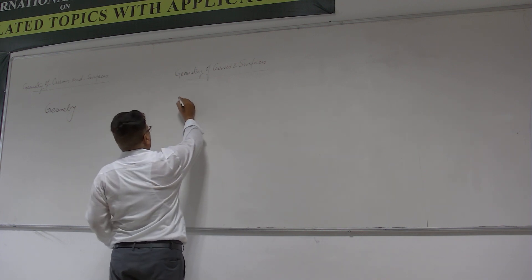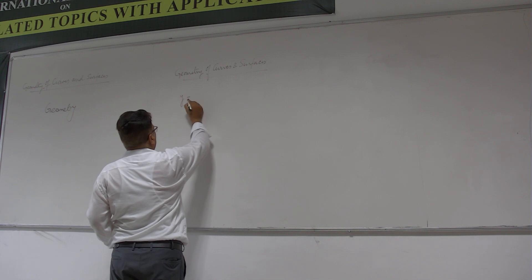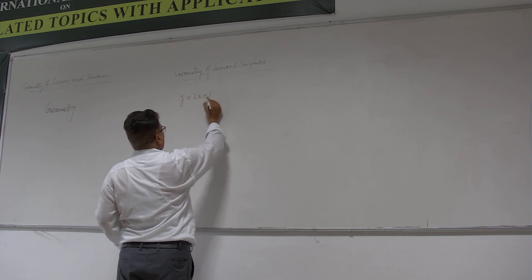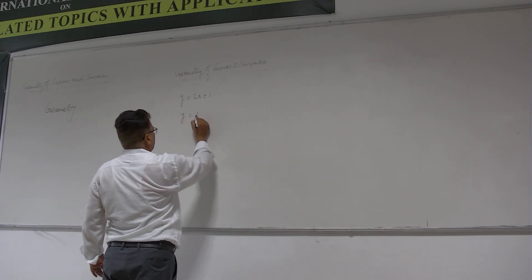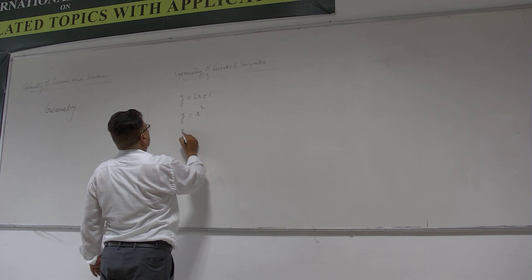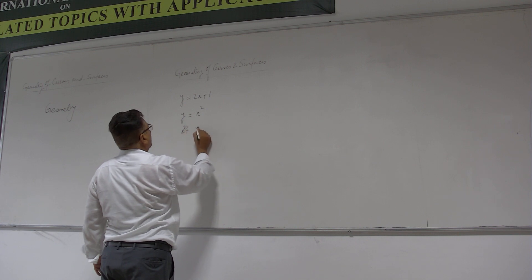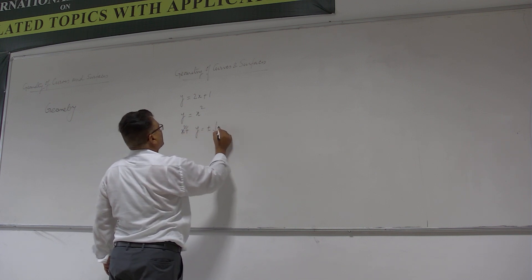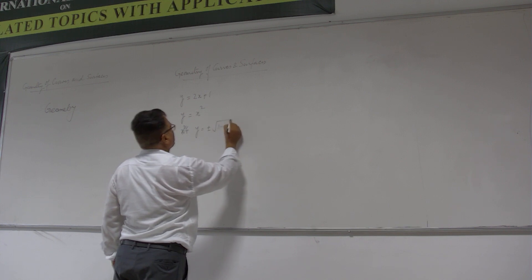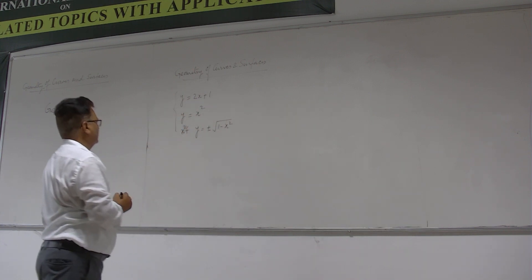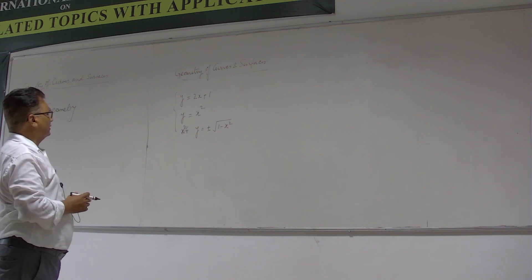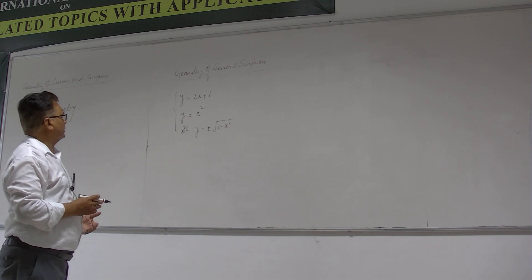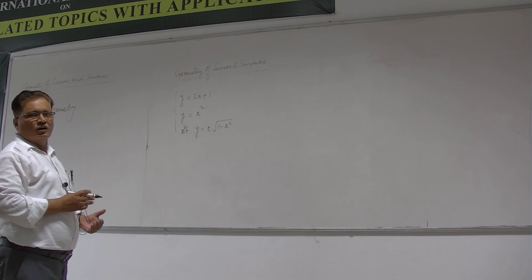For example, if you consider the equation y = 2x + 1, or y = x², or x² + y² = 1, or y = ±√(1 - x²). Here you see that y is explicitly related with x, so we call them explicit equations of a curve in a plane.